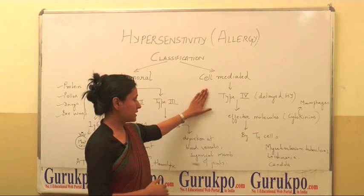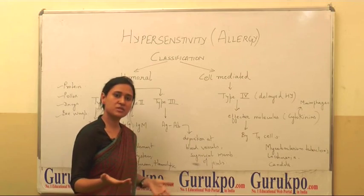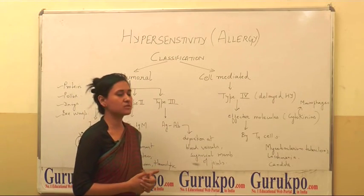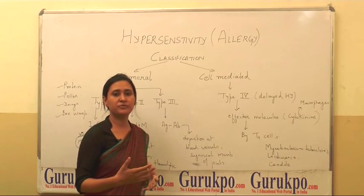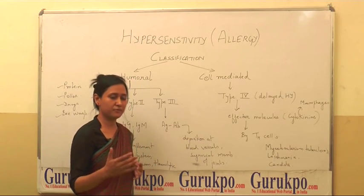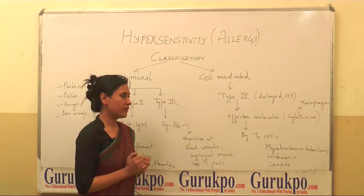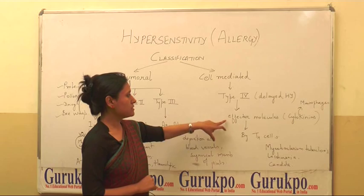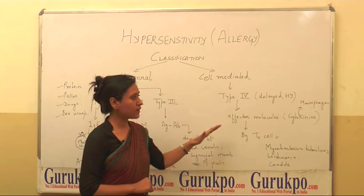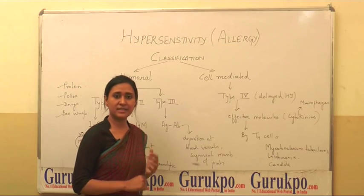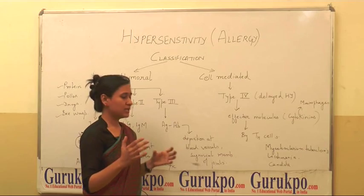The fourth type of hypersensitivity is also called delayed hypersensitivity. It is called delayed because cells take time for proliferation before they cause their effect or try to save the other cells of our body. The effector molecules produced are cytokines. These cytokines are produced by TH cells, which are produced along with MHC class molecules.